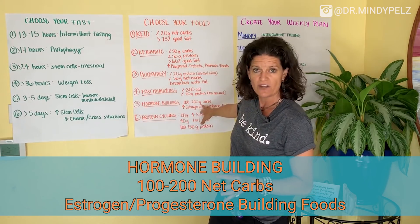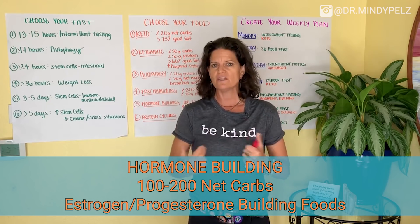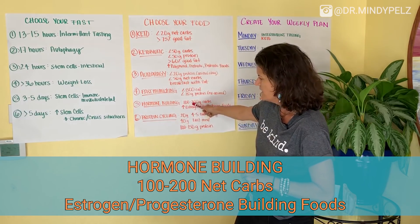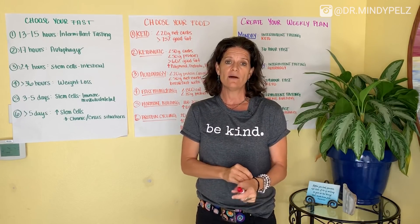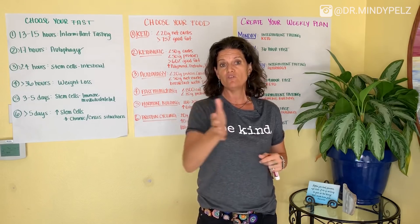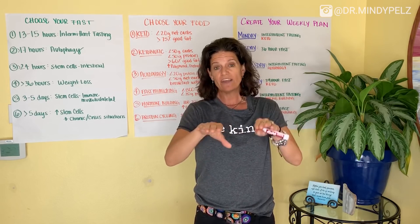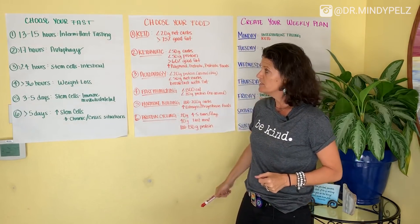The fifth style is hormone building feast days, where you increase your carbohydrate load to somewhere between 100–200 grams net carbs in a day, leaning into hormone-building foods like squashes, potatoes, some rices, tropical fruits, citrus fruits, and beans — foods we typically don't eat on keto. The sixth is protein cycling, where you keep net carbs at 50 grams and fat around 60%, cycling in 20 grams of protein every four to five times a day.